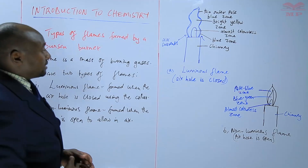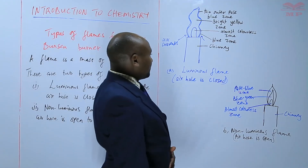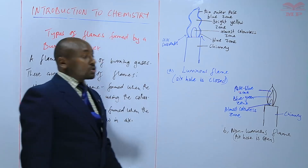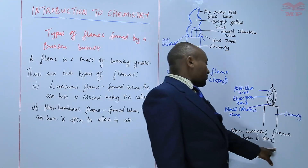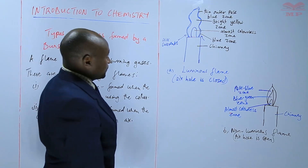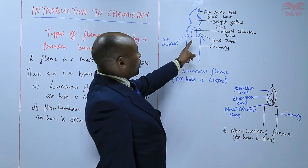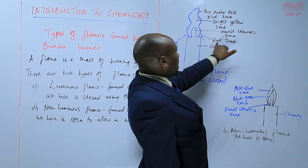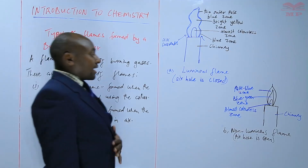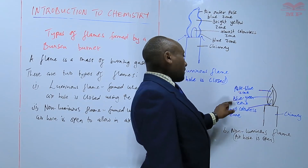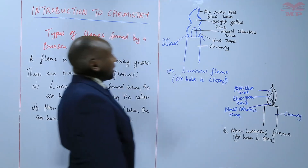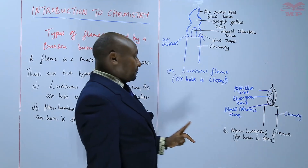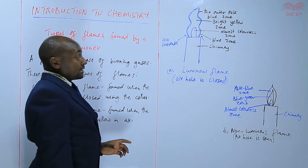So we have the two flames — the luminous flame and the non-luminous flame. In terms of their comparison: the luminous flame is formed when the air hole is closed using the collar; the non-luminous flame is formed when the air hole is open to let in air. The luminous flame has four zones — almost colorless zone, bright yellow zone, thin outer pale blue zone, and a blue zone at the bottom. The non-luminous has three zones — pale blue zone, blue-green zone, and the almost colorless zone. In terms of size, the luminous flame is larger and wavy, a bit unstable; the non-luminous is smaller and more stable.